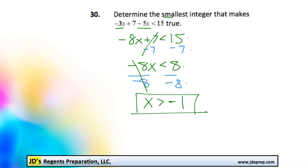Now we want to find the smallest integer that makes this true. Instinctively you might think negative 1 is the answer, but negative 1 isn't actually greater than negative 1. So the next greater integer bigger than that is 0.